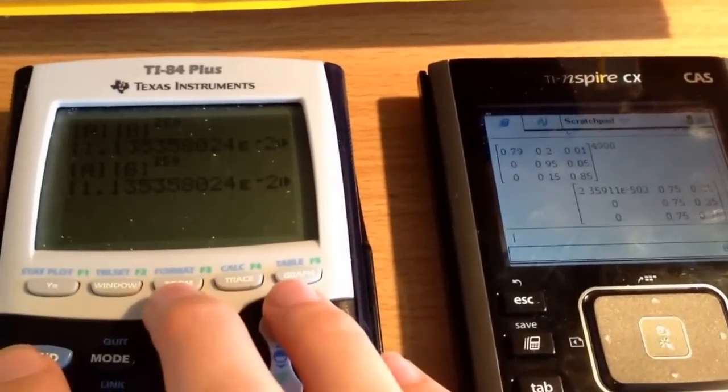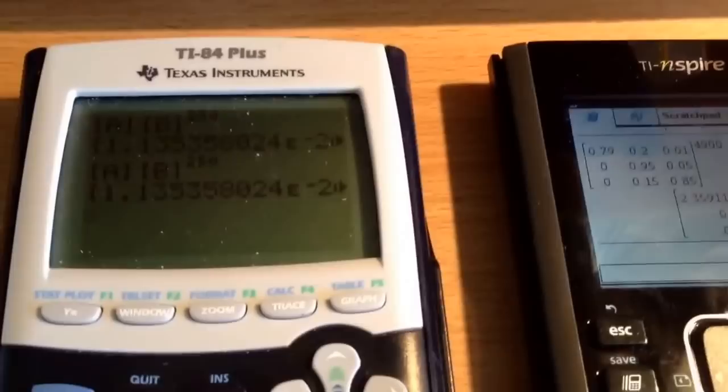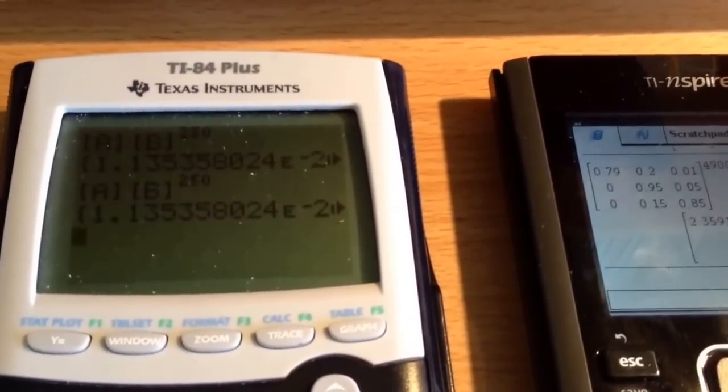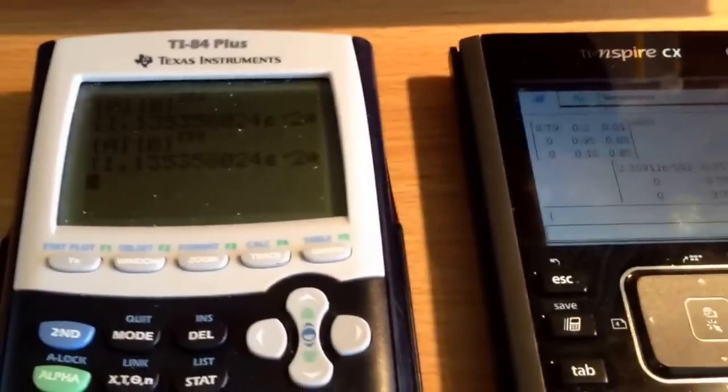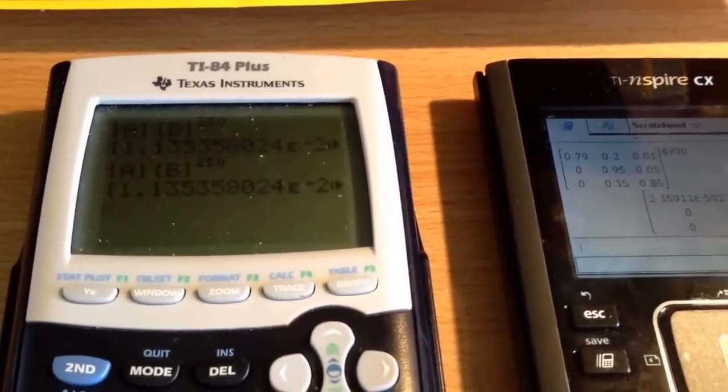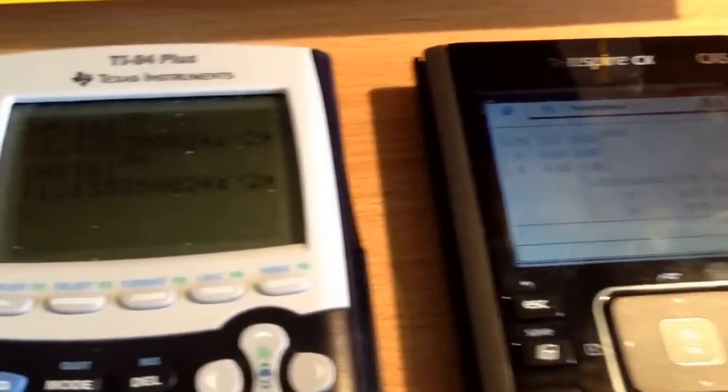So what I'm going to do on the actual TI here is raise a matrix, which is a 3x3 matrix, to a power of, let's start with 100 and actually see whether it's able to cope with it. And I'll do the same on the TI-Nspire CX-CAS.